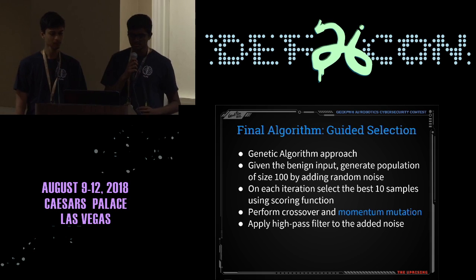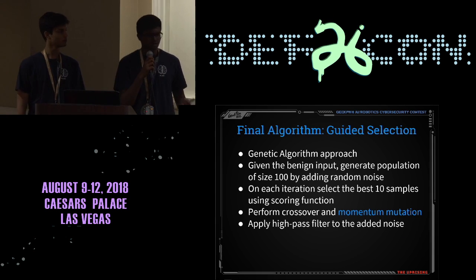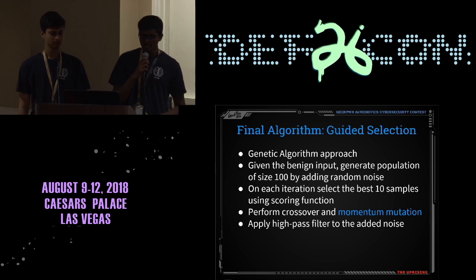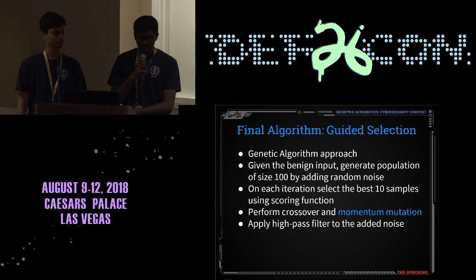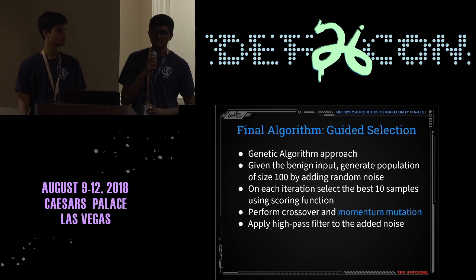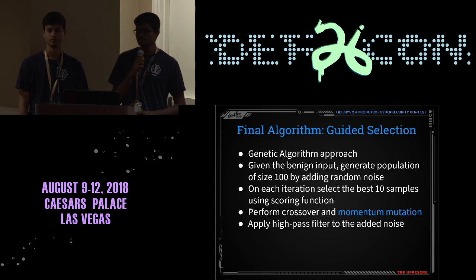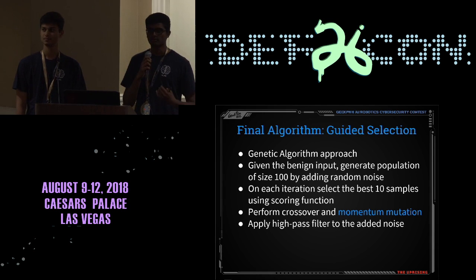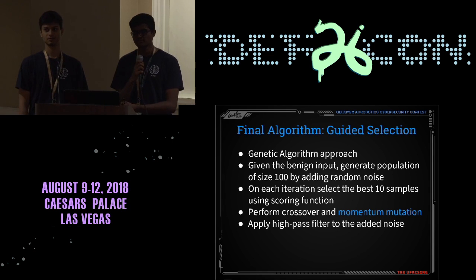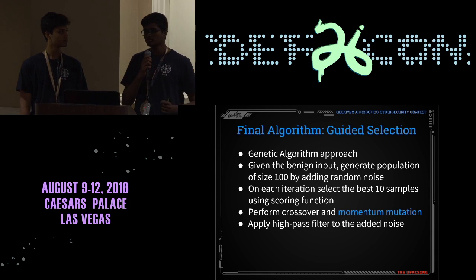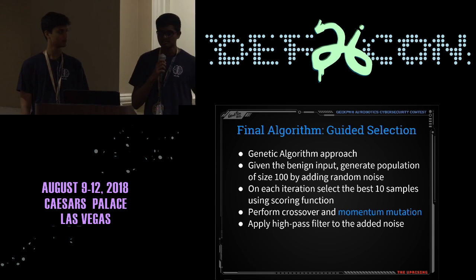On each iteration, we select the best 10 samples using a scoring function — our scoring function is CTC loss. Then we perform crossover and momentum mutation, which we'll cover shortly. Finally, we apply a high-pass filter to the added noise as a heuristic-based approach: humans recognize low frequencies more than high frequencies, so applying a high-pass filter lets us still trick the model while making the perturbation less recognizable to a human ear.